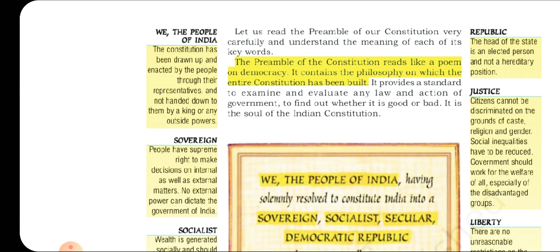'We the people of India' — the Constitution has been drawn up and enacted by the people through their representatives, and not handed down to them by a king or any outside power. The common people of our country's representatives have this power. 'Sovereign' means people have the supreme right to make decisions on internal as well as external matters — no external power can dictate the government of India, and no outside power has the right to interfere in our internal matters.